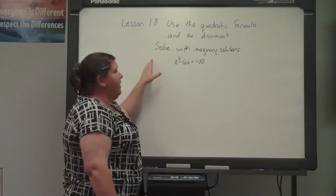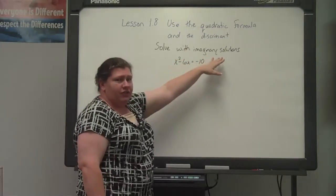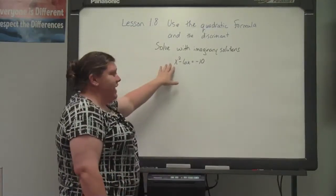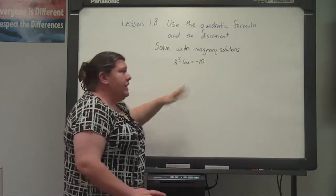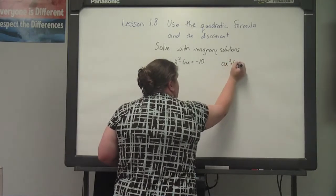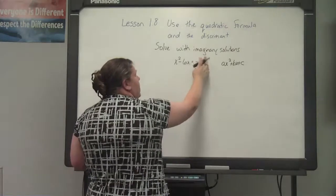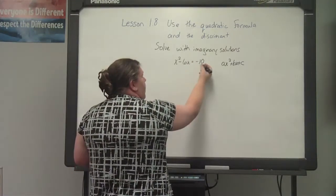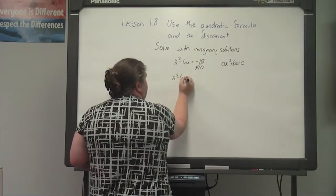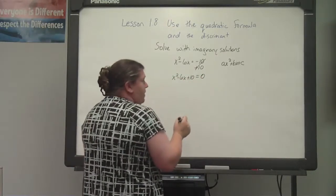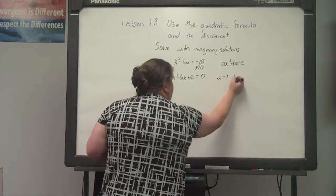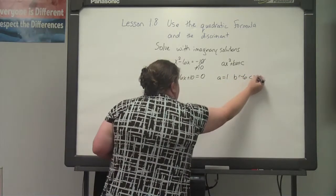The third concept is solving with imaginary solutions. With imaginaries, you're going to see a form of i. My equation is x squared minus 6x equals negative 10. We want it in standard form: ax squared plus bx plus c. So I move negative 10 to the other side by adding 10, giving x squared minus 6x plus 10 equals 0. My a is the understood 1, my b is negative 6, and my c equals 10.